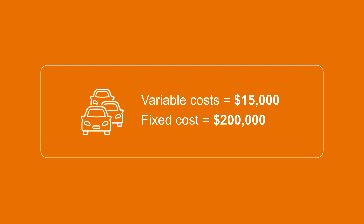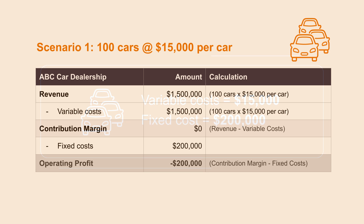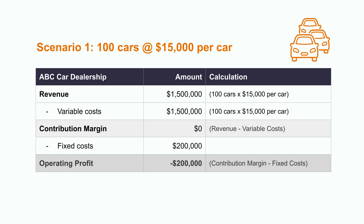At different price points we can estimate if our company will make a profit or a loss. So let's look at some numbers. If the dealership sells 100 cars at a price of $50,000, the total revenue will be $1,500,000. The dealership will incur a loss because this amount will only be able to cover the vehicle cost — the fixed cost of $200,000 still needs to be covered.